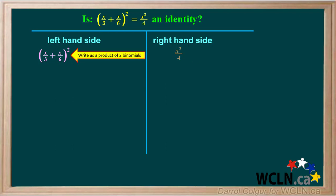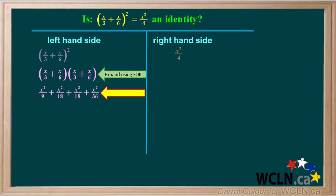We'll work through the expression on the left side. We can start by writing this as a product of two binomials, like this. Now we'll expand this product using FOIL. Expanding this gives us x²/9 + x²/18 + x²/18 + x²/36.